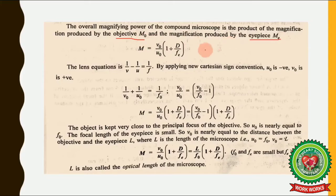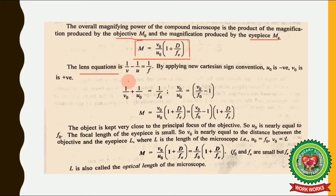The overall magnifying power of a compound microscope is the product of the magnification produced by the objective and that produced by the eyepiece. Multiplying M₀ and Mₑ: M₀ = V₀/U₀ and Mₑ = 1 + D/Fₑ. Now we apply the lens equation 1/V − 1/U = 1/F with Cartesian sign conventions: U₀ is negative (object on the left) and V₀ is positive (image on the right).